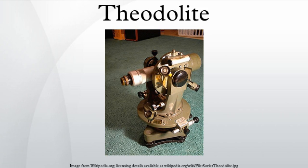The optical axis of the telescope, called the sight axis, defined by the optical center of the objective lens and the center of the crosshairs in its focal plane, must also be perpendicular to the horizontal axis. If not, then a collimation error exists. Index error, horizontal axis error, and collimation error are regularly determined by calibration and are removed by mechanical adjustment. Their existence is taken into account in the choice of measurement procedure in order to eliminate their effect on the measurement results of the theodolite.